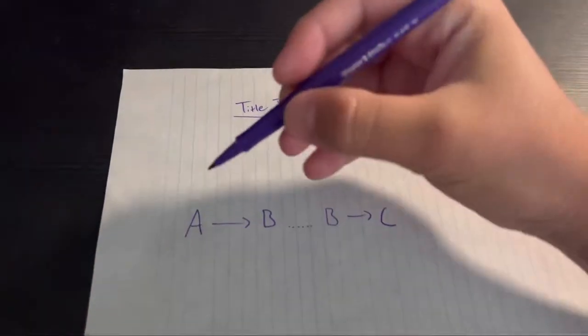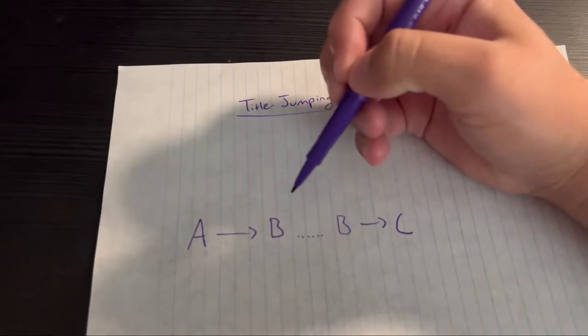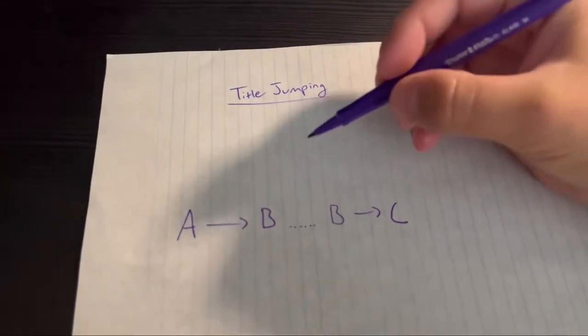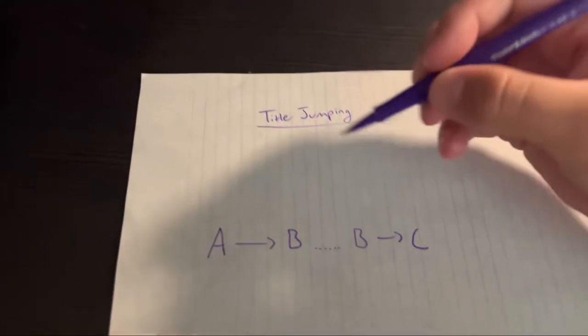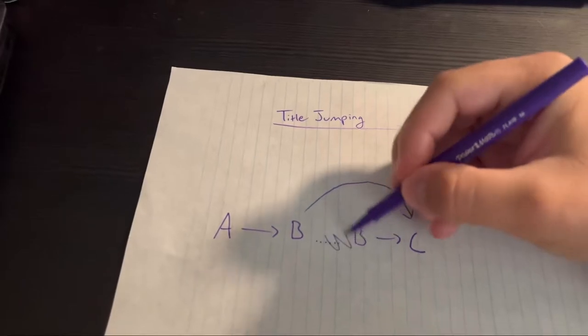Title jumping is when person A sells it to person B, person B decides, I don't really want to pay all that sales tax. I'm just going to sell it to person C. We jump over, like so, and forget about all this.